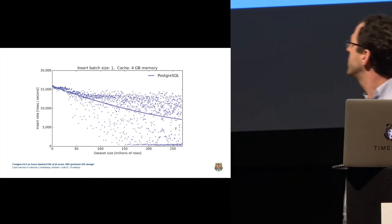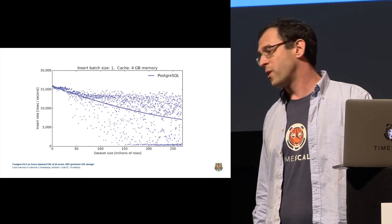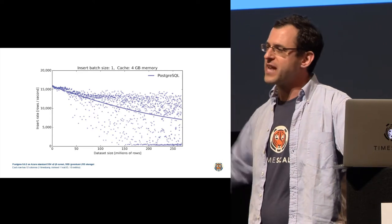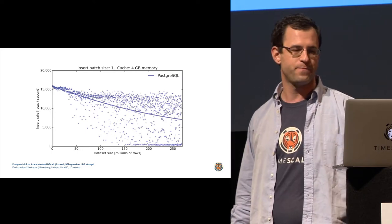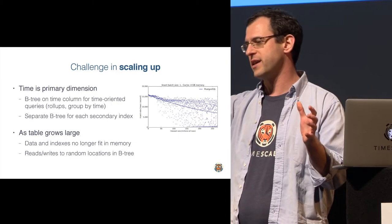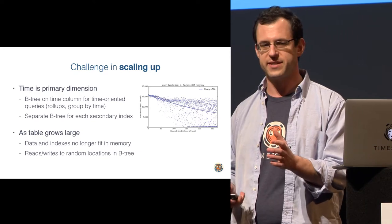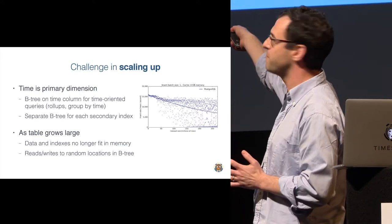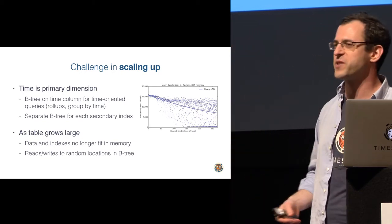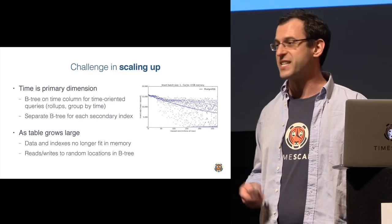But once the database gets a little big, things kind of go off a cliff. We see this big plunge, large variance, and sometimes you're getting on the order of a few hundred inserts per second. What's happening is you're trying to index this data, your indexes are not all staying in memory, and so now when you're inserting data, you need to maintain a separate B-tree for each dimension, which means a lot of swapping back and forth to disk.